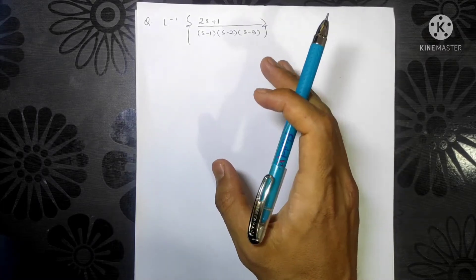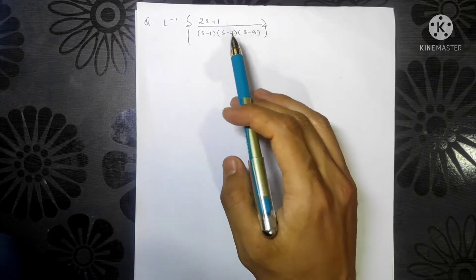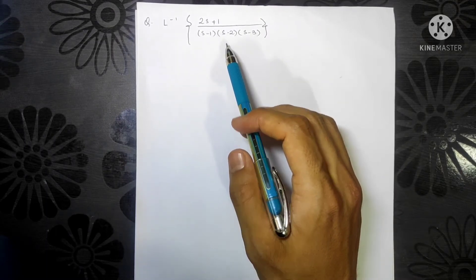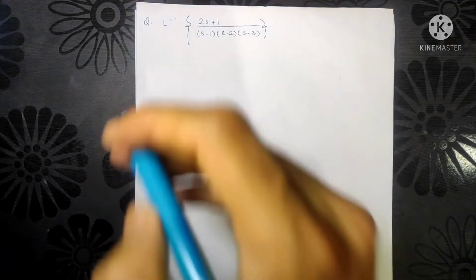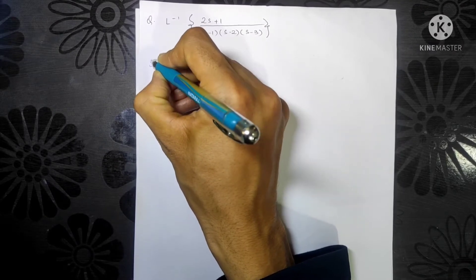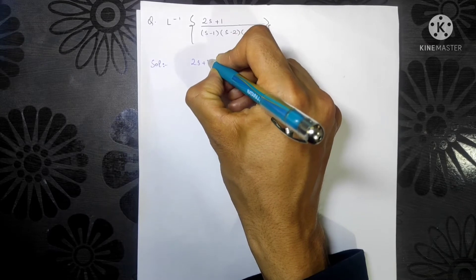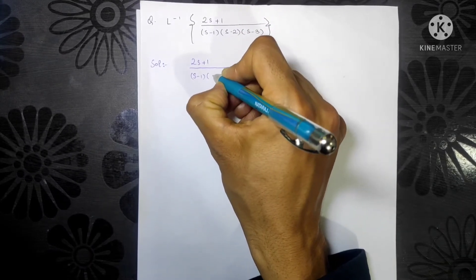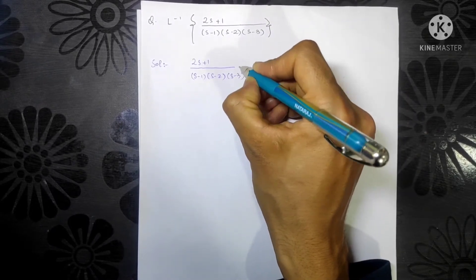To find the Laplace inverse of this, we have many approaches, but the approach I prefer is to partially factorize the denominator. So let's set up the solution: (2s + 1) divided by (s minus 1)(s minus 2)(s minus 3).